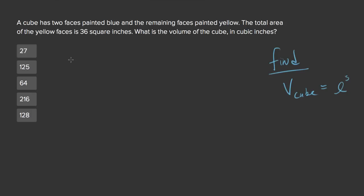Now we're told that the area of four faces, or four times the area of one square face, is equal to 36. That's one of the pieces of information we're given.